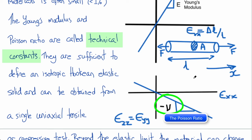Then, in fact, these two constants, the Young's modulus and the Poisson ratio, turn out to be sufficient to completely define the properties of an isotropic Hookean elastic solid.